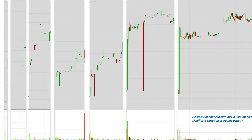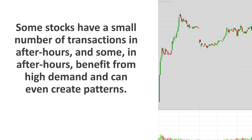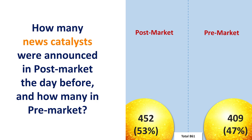A remark here is that all the stocks you see now on the screen — the after-hours — is for stocks that had the catalyst in post-market. Studying the after-hours, what I observed is that some stocks have a small number of transactions in after-hours, and some in after-hours benefit from high demand and can even create patterns. Having the 5-minute data for after-markets, the first question I looked into was how many news catalysts were announced in post-market the day before and how many in pre-market.